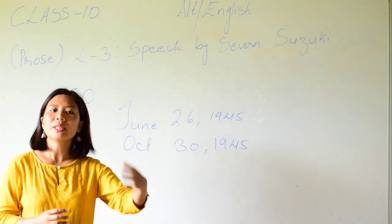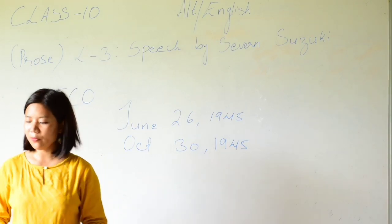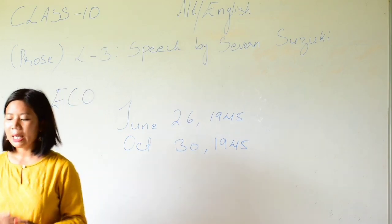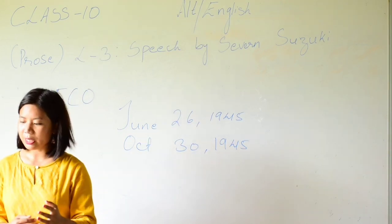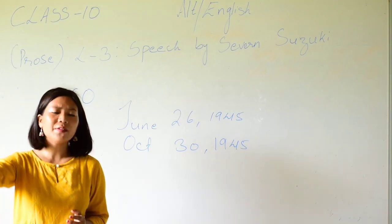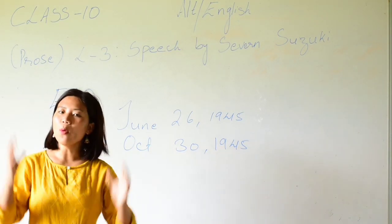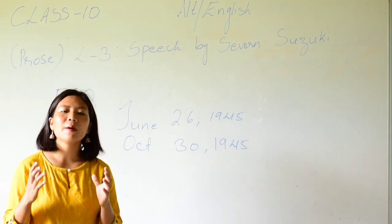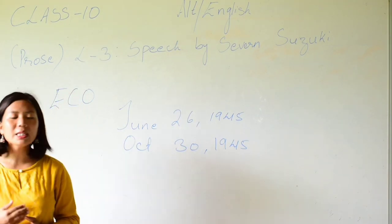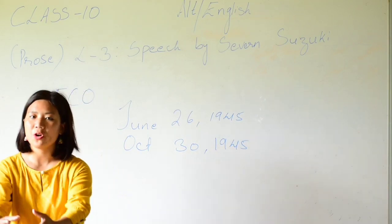In her speech, Severn also used examples of developed northern countries. She said that there are more than enough of all the necessary things needed for survival. But still, those people are afraid to share, afraid to let go of some of their wealth and help the needy.